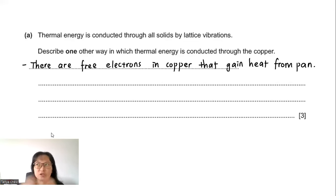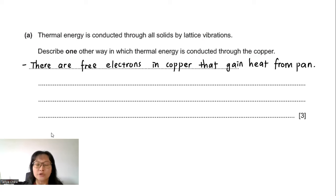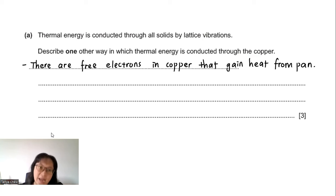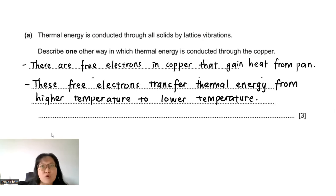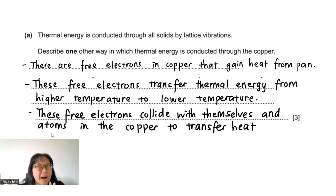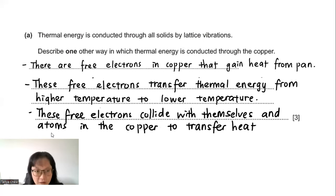Copper is a good conductor of heat because it has delocalized or free electrons. These electrons are free to move inside the copper. When the pan is heated, the free electrons gain kinetic energy and move to transfer thermal energy from higher to lower temperature regions, colliding with other electrons and vibrating atoms as they do so.